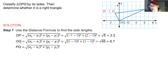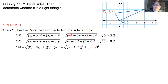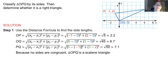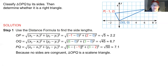The slightly more complicated calculation is PQ, since there are no zeros. You have (6 - (-1)) and (3 - 2), subtracting the coordinates to get 7² + 1² = 49 + 1 = 50, and the square root of 50 is 7.1. Since no sides are congruent — 2.2, 6.7, and 7.1 are all different — you can classify this as a scalene triangle.